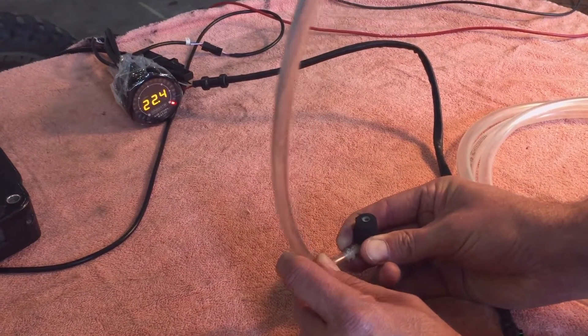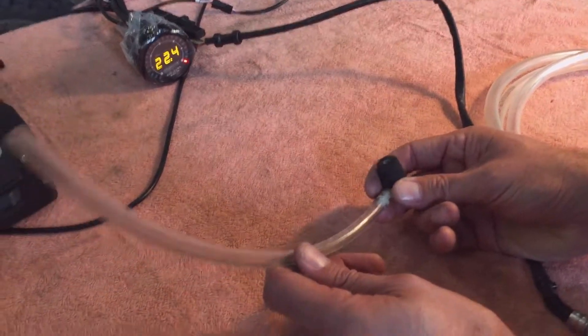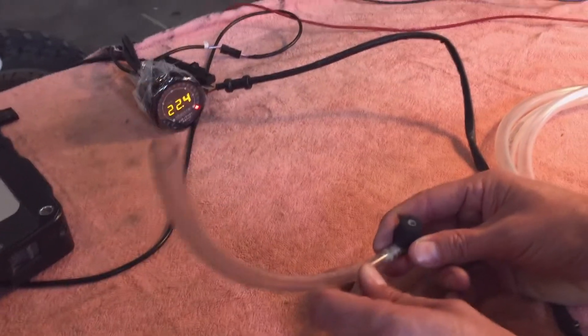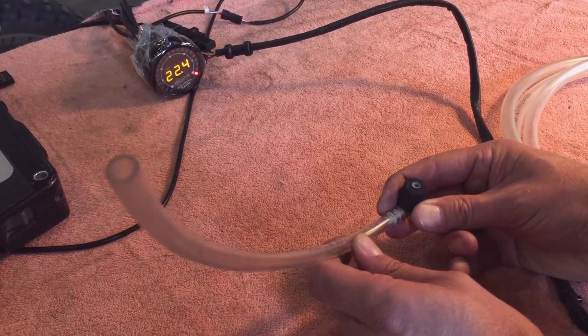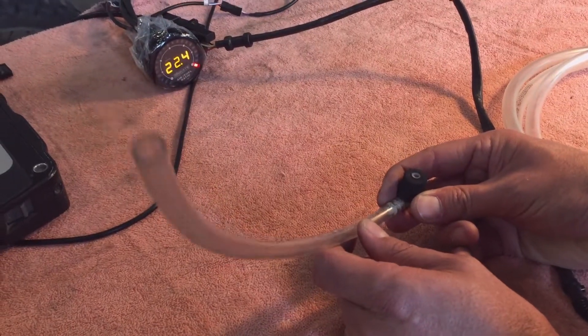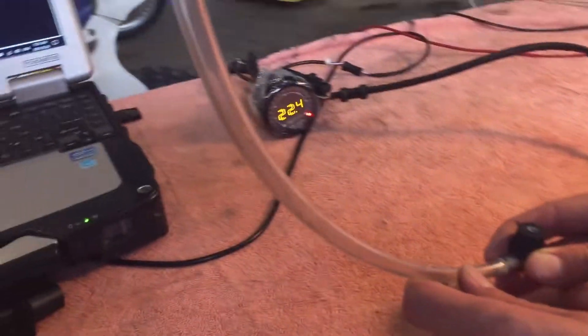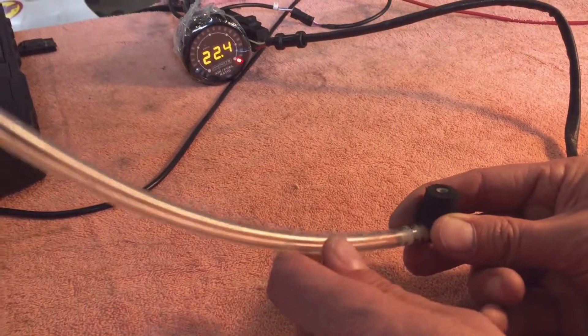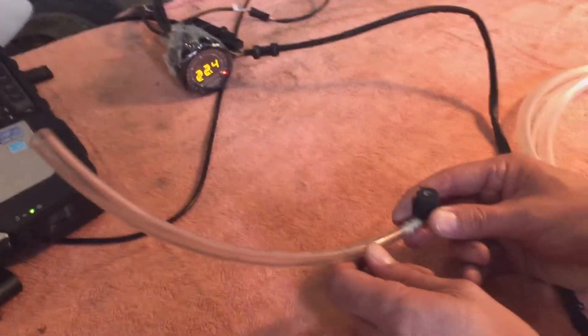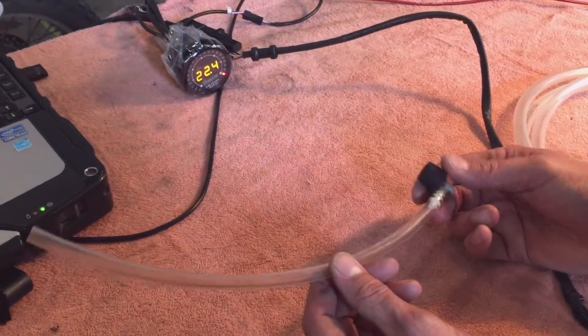This will tell me if it's too low or too high. The challenge of doing this off the bike is you typically have the carb sitting in a different position. If you try to do it with different liquids like water or alcohol, they have a different density than fuel, and the float level will actually change.